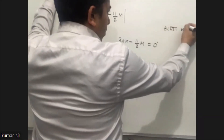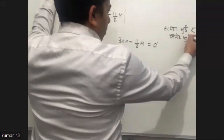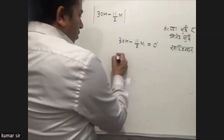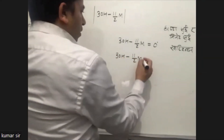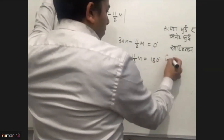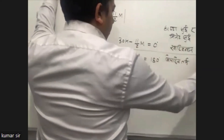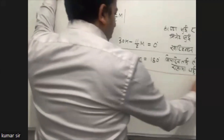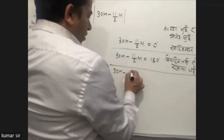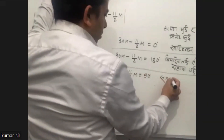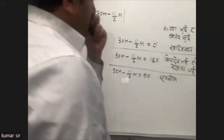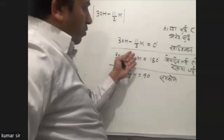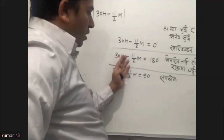We kept on: 30y minus 11 by 2y equals... going in the opposite direction, this question goes in the opposite direction. So 30y minus 11 by 2y equals zero, and 30y minus 11 by 2y equals the other side — both directions of the absolute value.